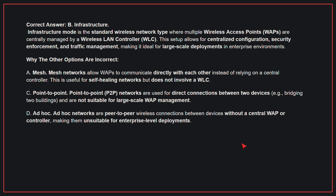Why the other options are incorrect? A, Mesh: mesh networks allow WAPs to communicate directly with each other instead of relying on a central controller, which is useful for self-healing networks but does not involve a WLC. C, Point-to-point: point-to-point networks are used for direct connections between two devices and are not suitable for large-scale WAP management. D, Ad-hoc: ad-hoc networks are peer-to-peer wireless connections between devices without a central WAP or controller, making them unsuitable for enterprise-level deployments. Therefore, the correct answer is B, Infrastructure.